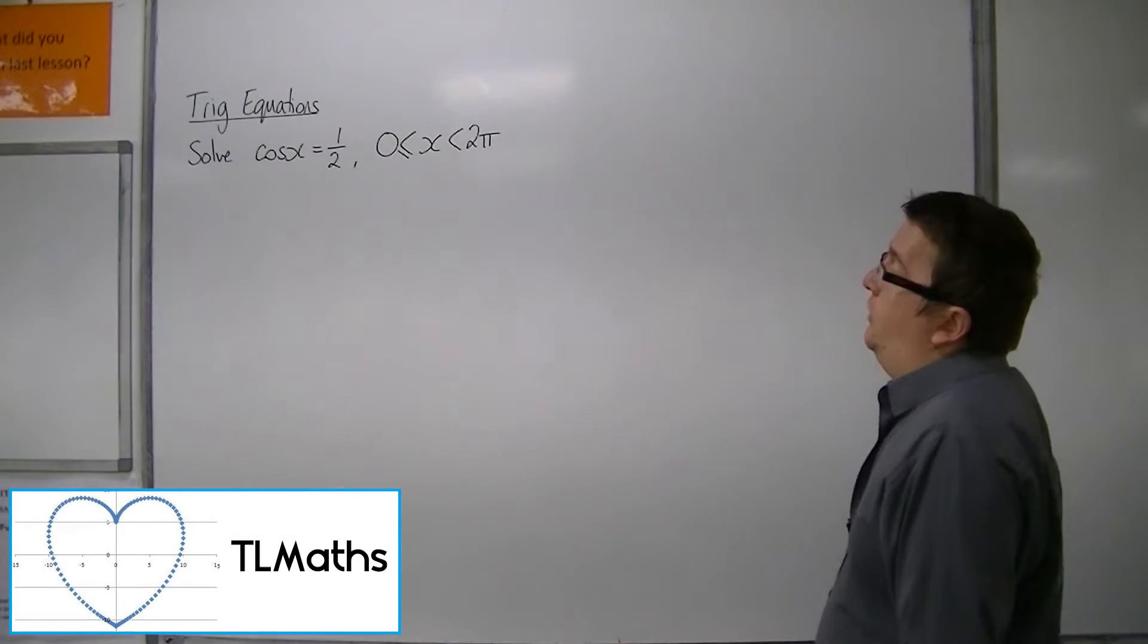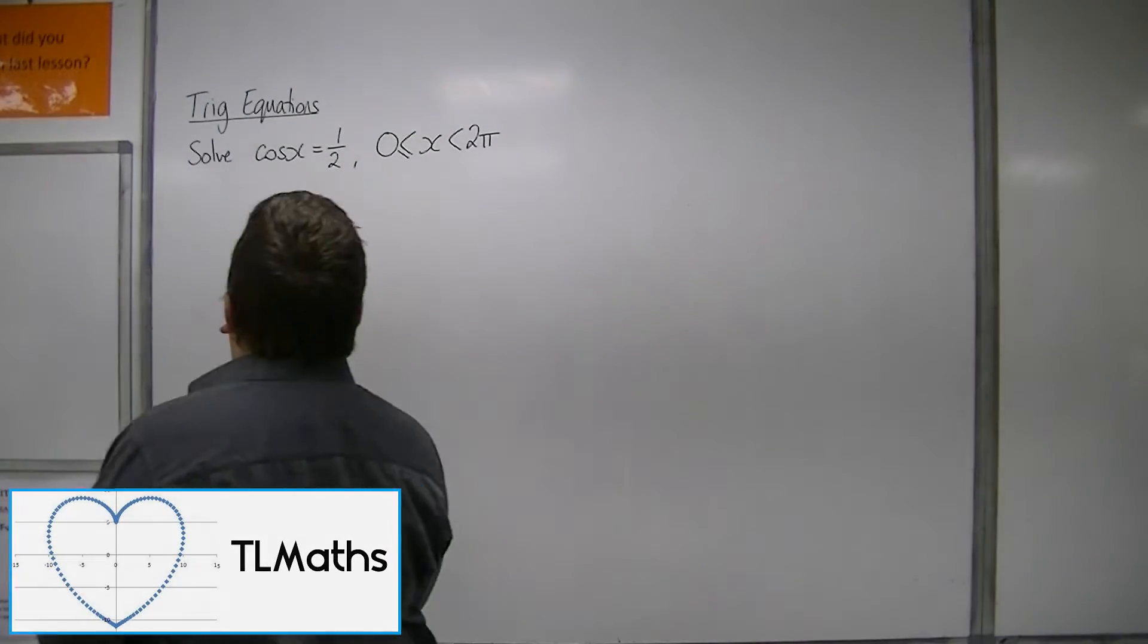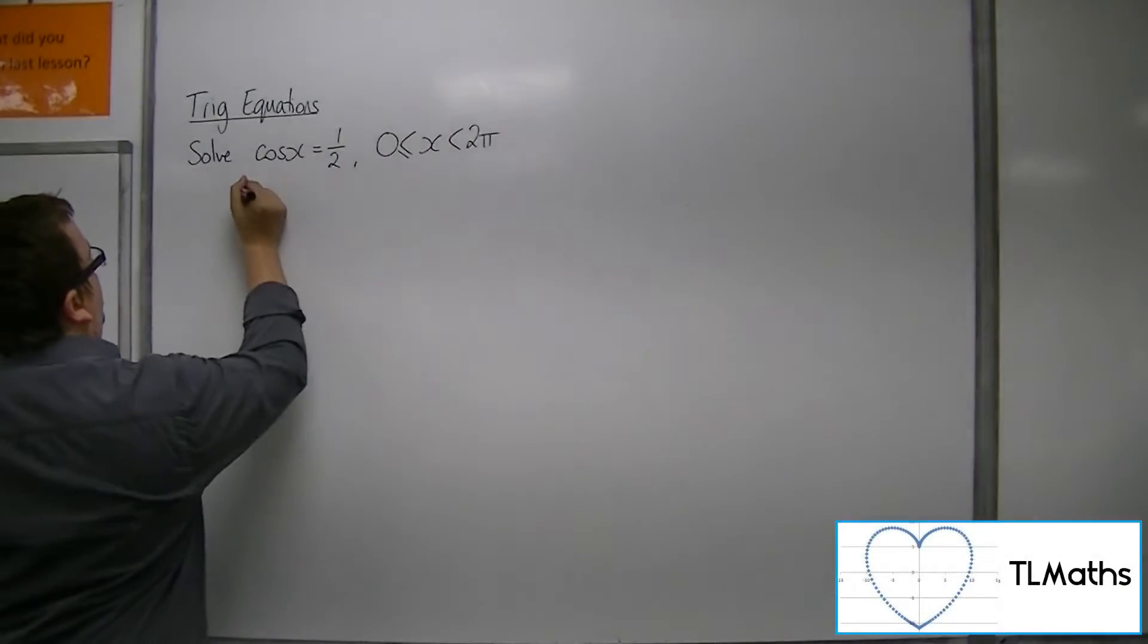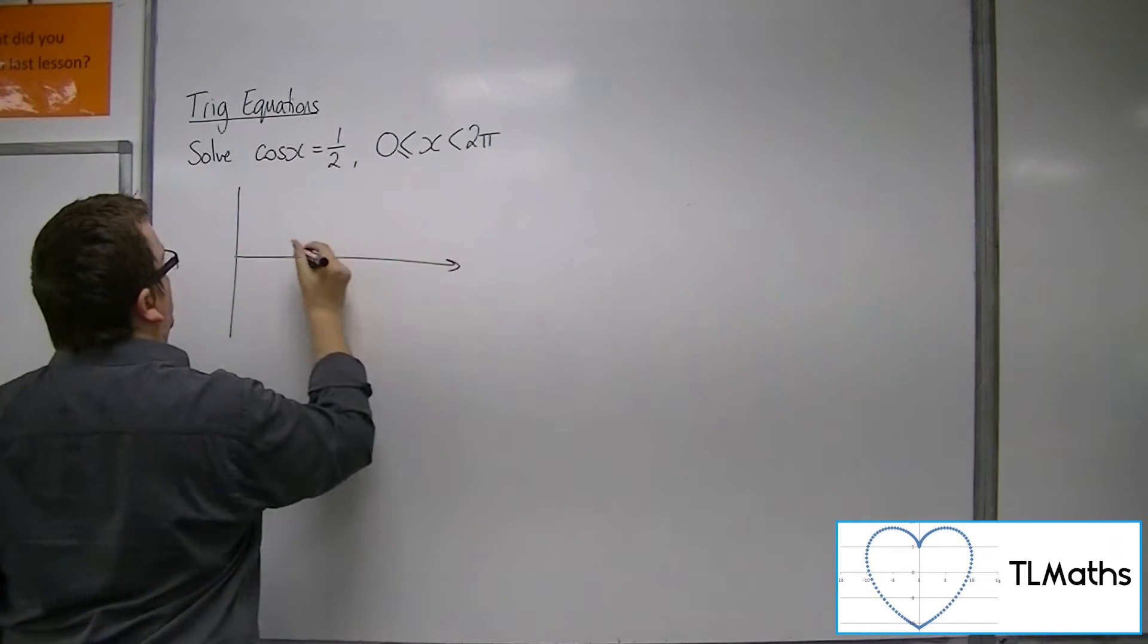Okay, so solving cos x equals one half between 0 and 2 pi radians. First of all, sketch the cosine curve.